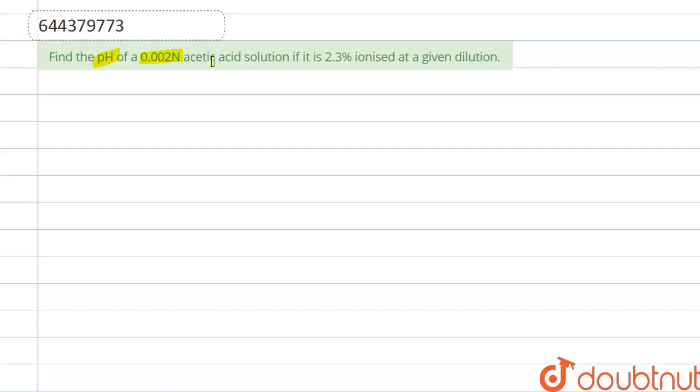Find the pH of 0.02 N acetic acid solution if it is 2.3% ionized at a given dilution.